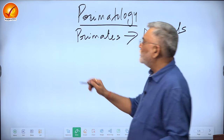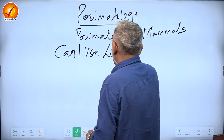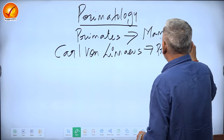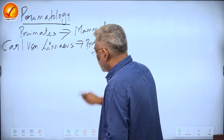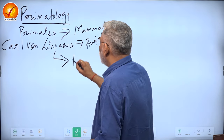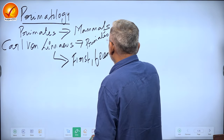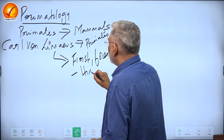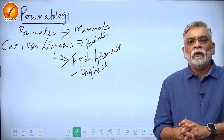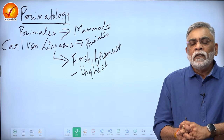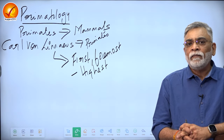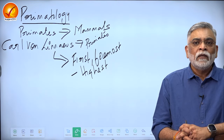It was Carl von Linnaeus who gave the name primates to this particular order. The reason he chose to call this order primates is because primates translates literally to the first or the foremost, and it also implies the highest. Because the Homo sapiens represent the zenith of organic evolution, this particular order obviously deserves the name primates - the first, the foremost and the highest.